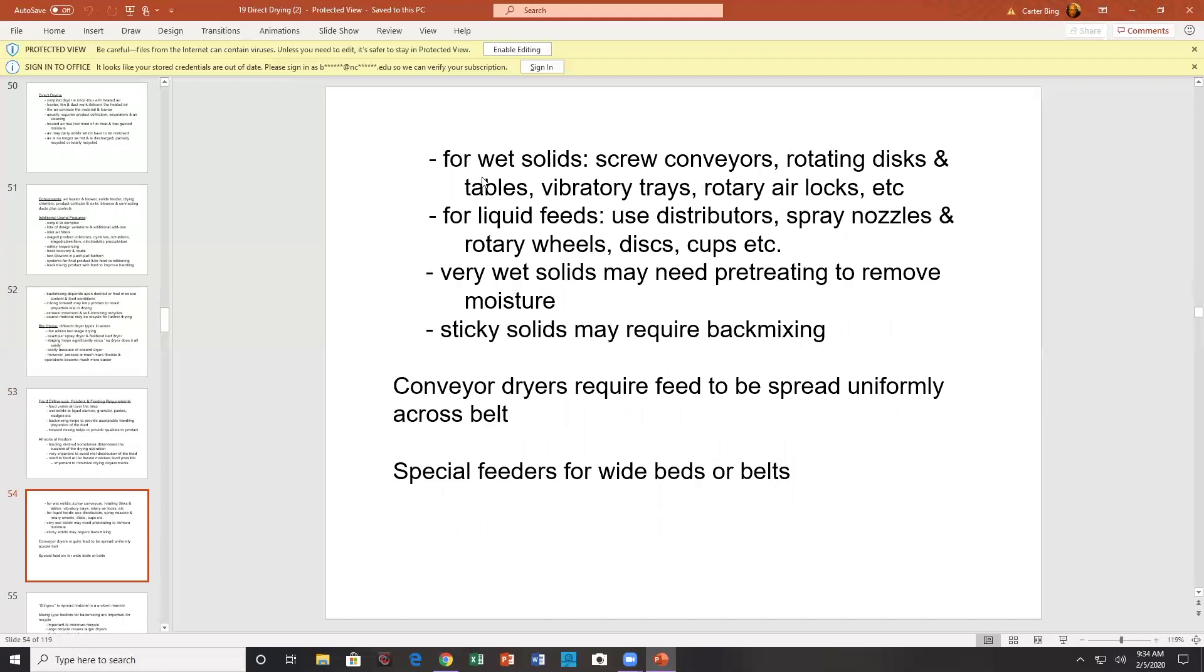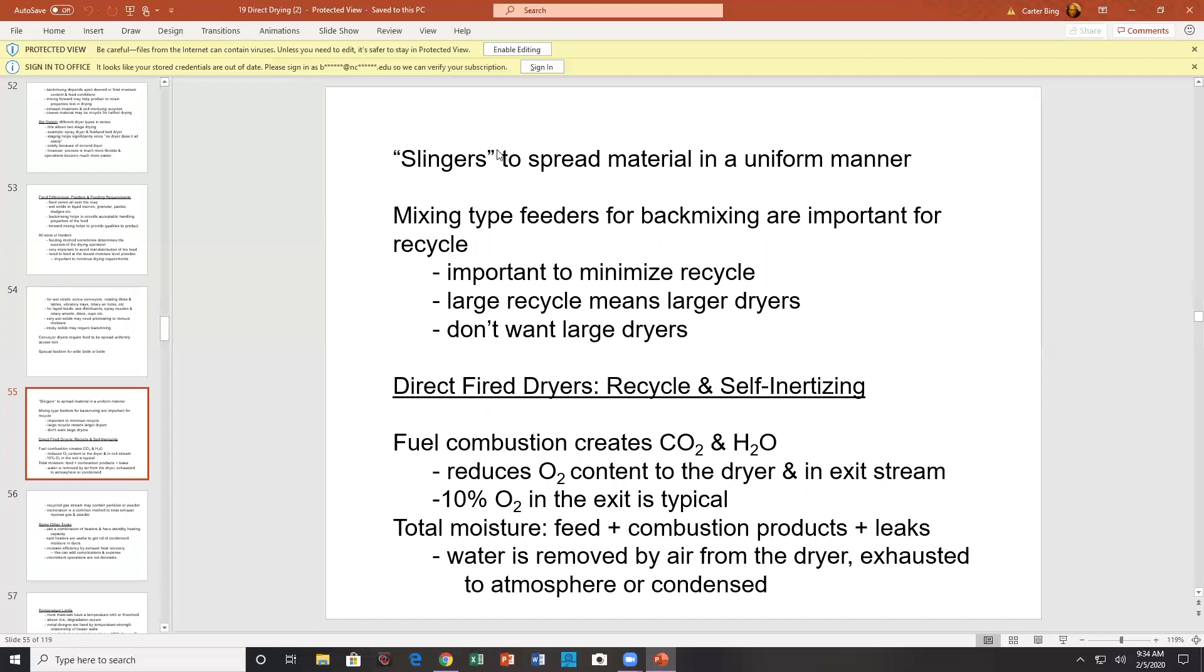For wet solids, screw conveyors, radiating discs, vibratory trays, rotary air locks are often used. For liquids, you're looking for spray nozzles, wheels, discs. For very wet solids, may need pretreatment to remove moisture. Sticky solids may require back mixing. Conveyor dryers require feed to be spread uniformly across the belt. Special feeders for wide belts. Slingers, spread the material in uniform matter. Assuming the slingers actually work. Just because the slinger is rotating, which is highly likely, doesn't mean that there isn't any buildup on the wheel or on the slinging device. So you may have to periodically clean your slingers.